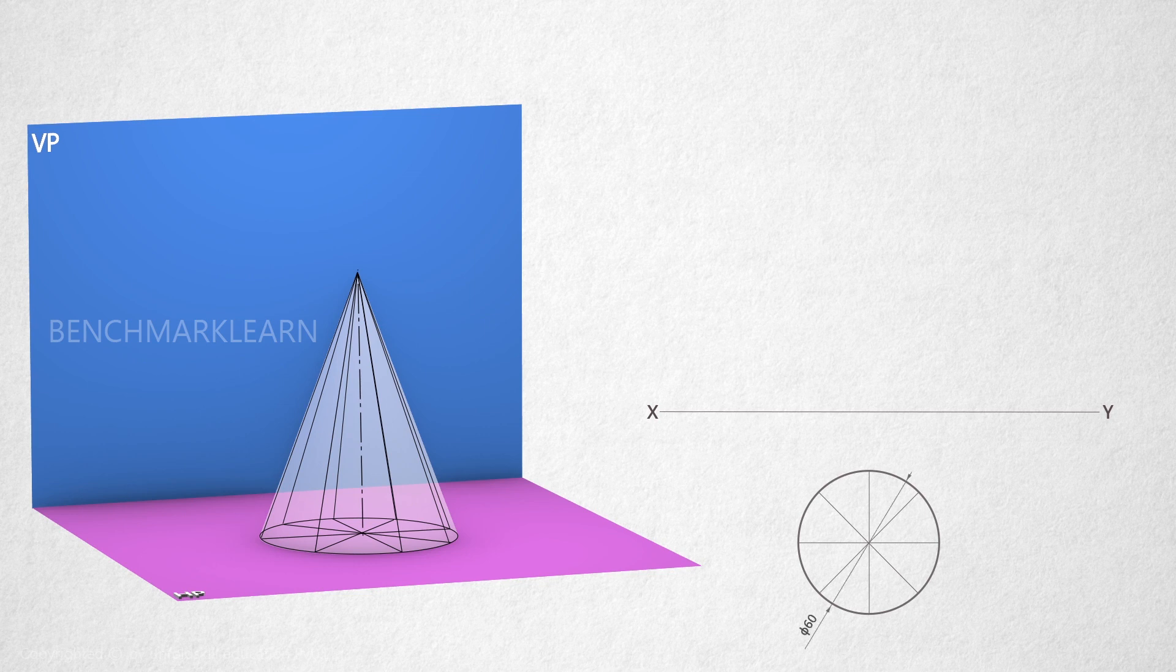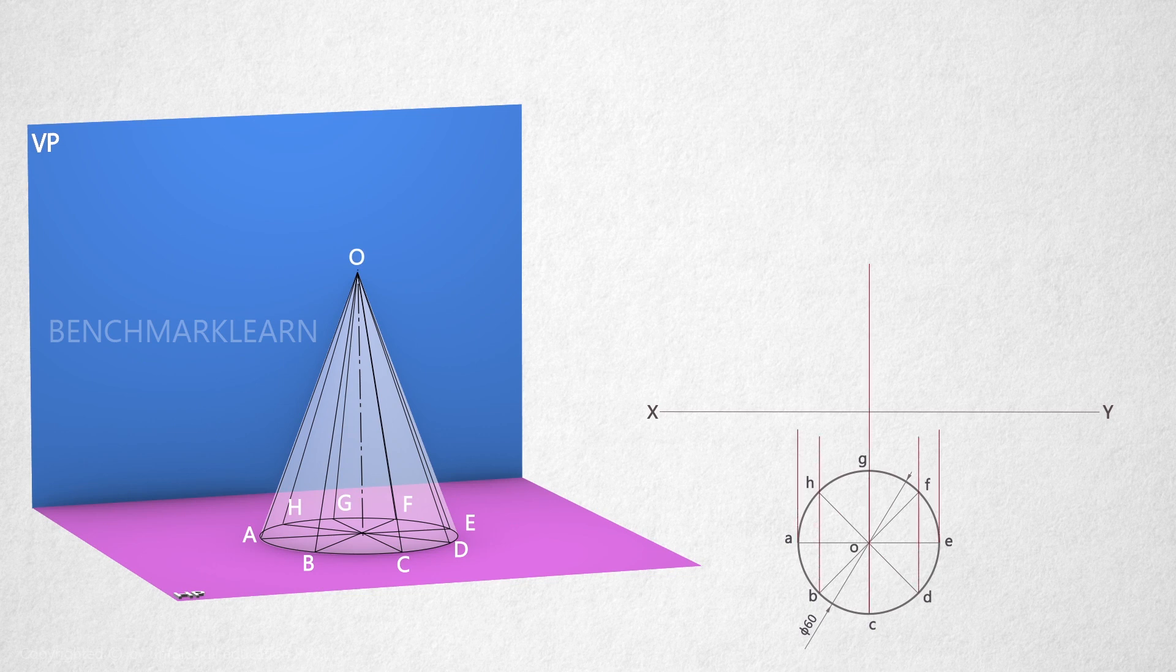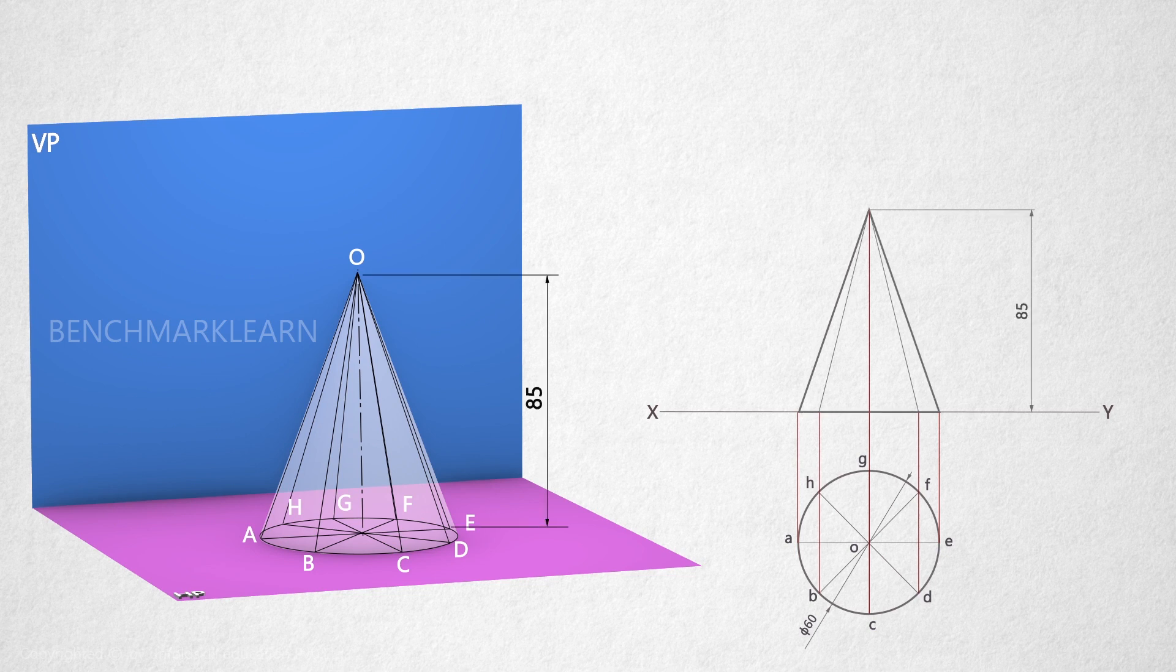The bottom end of the generators are marked as A, B, C, D, E, F, G, and H. The apex of the cone is marked as O. Now project the top view to obtain the front view of the cone with height 85mm. Name the bottom end of the generators and the apex.